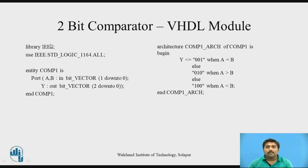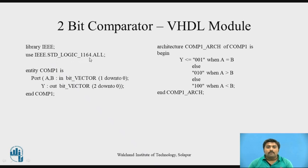In the library declaration part, you mention which library you are using. Here we are using the IEEE library, so we write 'library IEEE'. From that, which package we are using — that's 'use IEEE.std_logic_1164'. This package is included, and from that we are using all, so that's why '.all' is there.